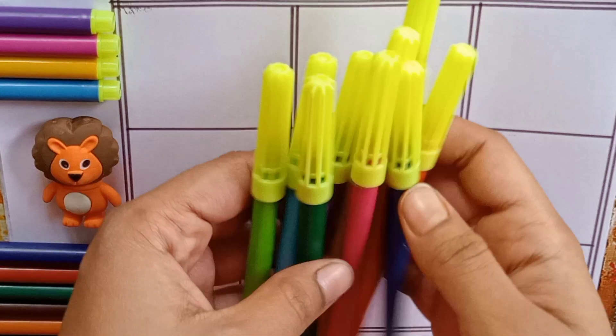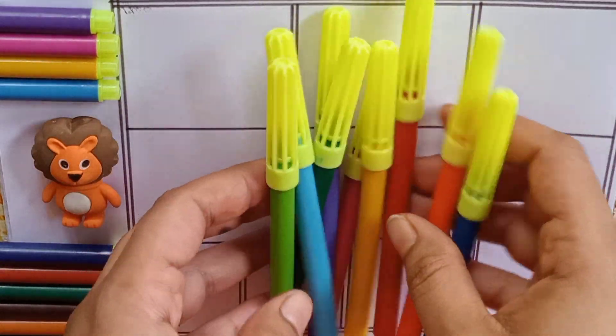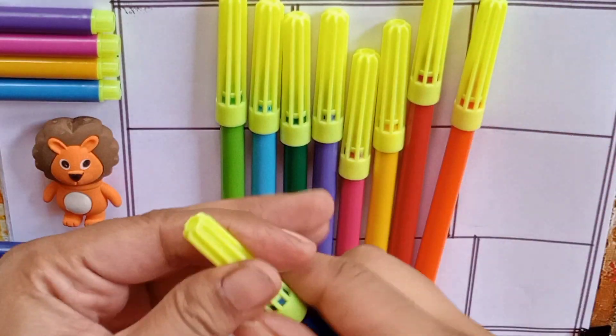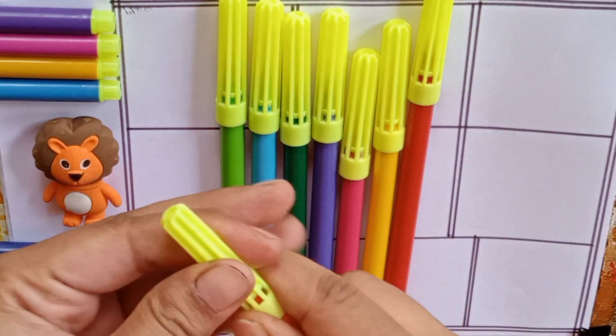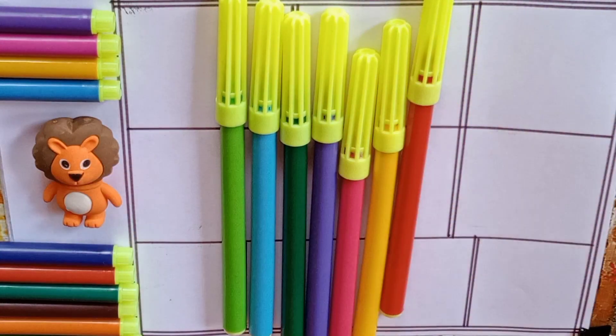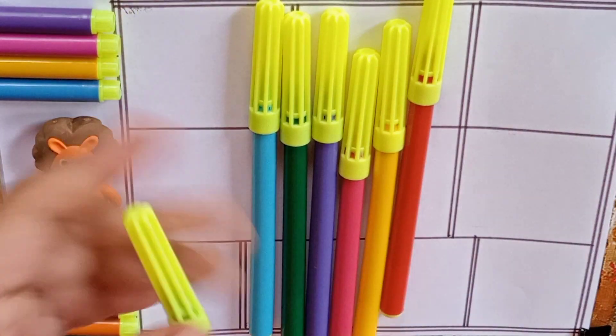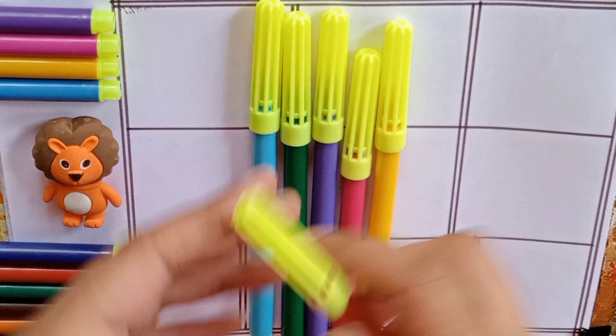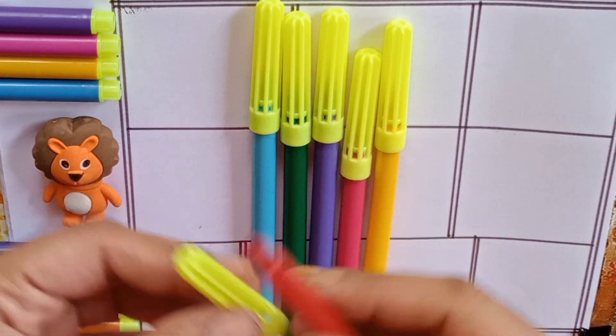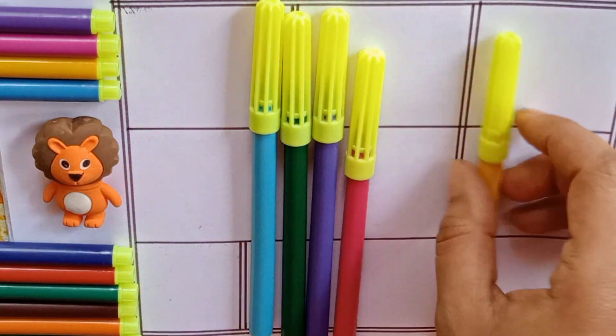Wow, color pens. So many colors. Let's learn the colors. Our first color is blue. Second color is orange. Third color is light green. Fourth color is red. Fifth color is yellow.